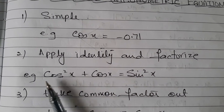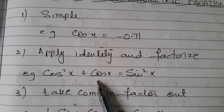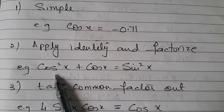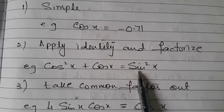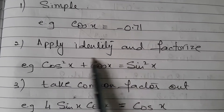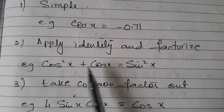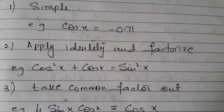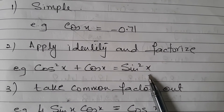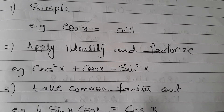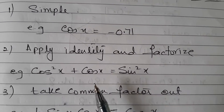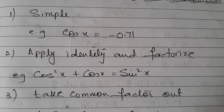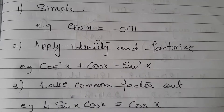Then there is the trigonometric equation where you have to apply an identity and then factorize it. For example, cos²x + cos x = sin²x. In this equation we have two trigonometric functions — cos and sin. When solving trigonometric equations, we need to change them into a single trigonometric function, so here we will have only cos x.